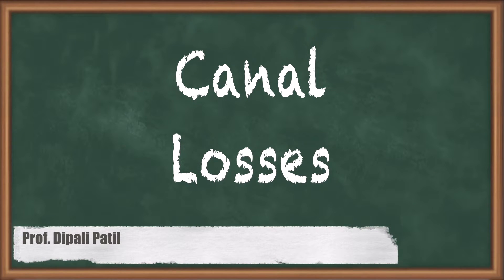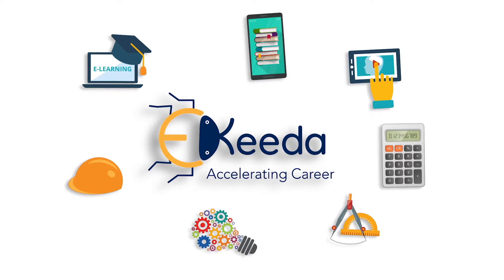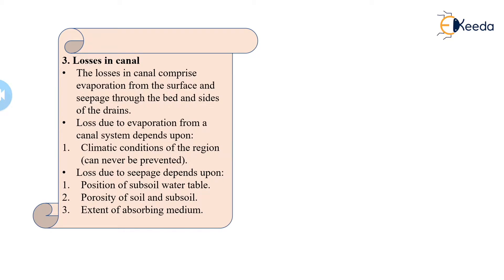In this video, we are going to study the losses that occur in the canal. The losses in a canal comprise evaporation from the surface and seepage through the bed and sides of the drain. So the two major losses are evaporation and percolation, which occur throughout the side flows and at the bed channel of the canal.